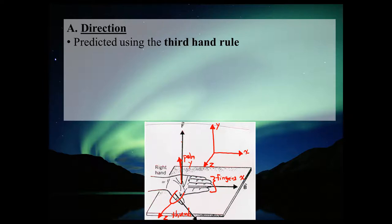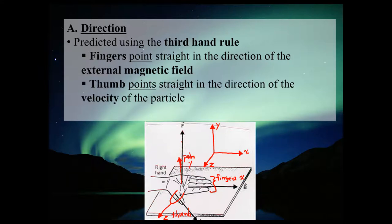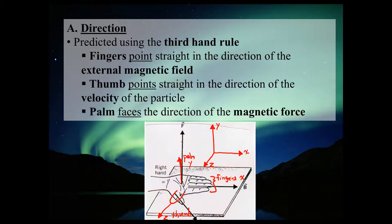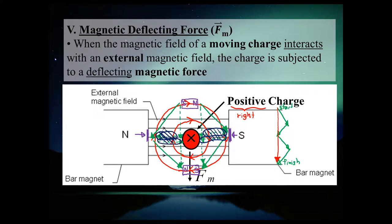Let's talk about what the different parts of your hand represent in the third-hand rule. You take your fingers and point them in the direction of the external magnetic field — usually from something like jumbo bar magnets. Your thumb points in the direction the particle is moving, the direction of velocity. Whatever direction your open palm faces, that is the direction of the magnetic deflecting force. Let's go back to the previous example and use this to much more quickly identify the direction of the magnetic force.